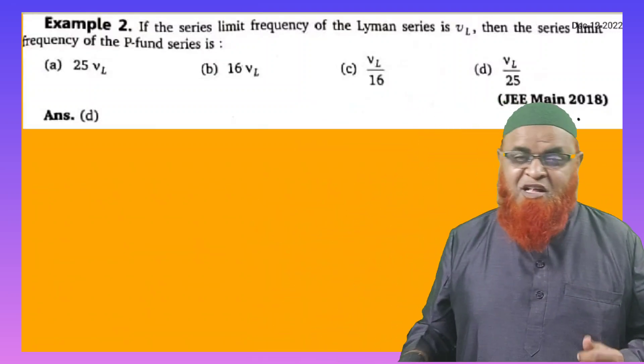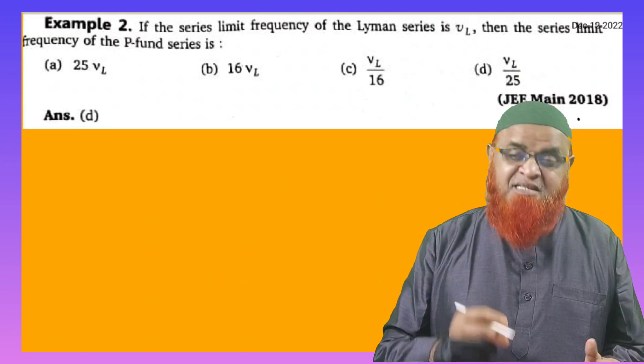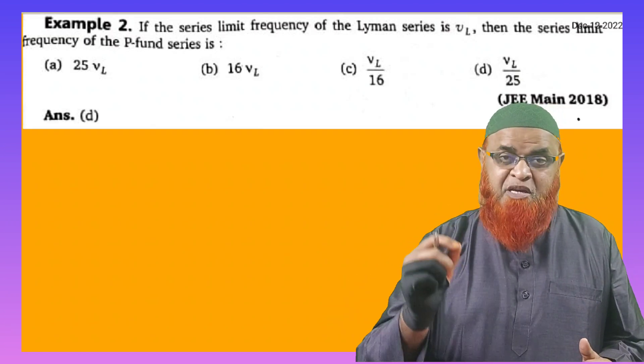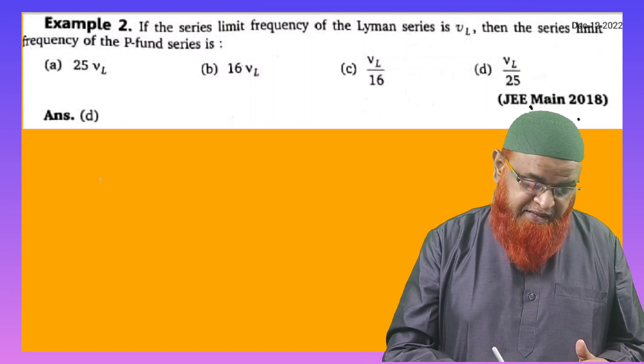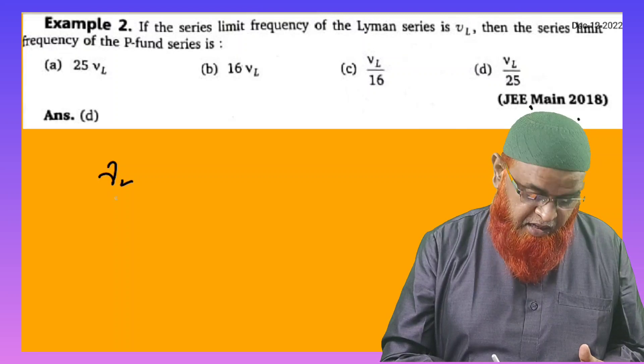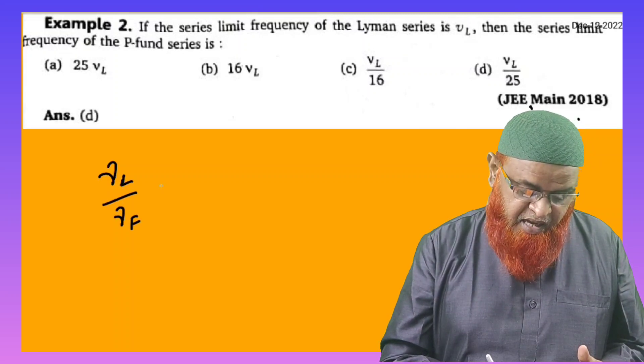Okay my dear students, how can you solve this problem in just a single step method? It's very simple. He's asking us to find out what is the relation between frequency and principal quantum number. You can just write here frequency of Lyman series divided by frequency of Pfund series.